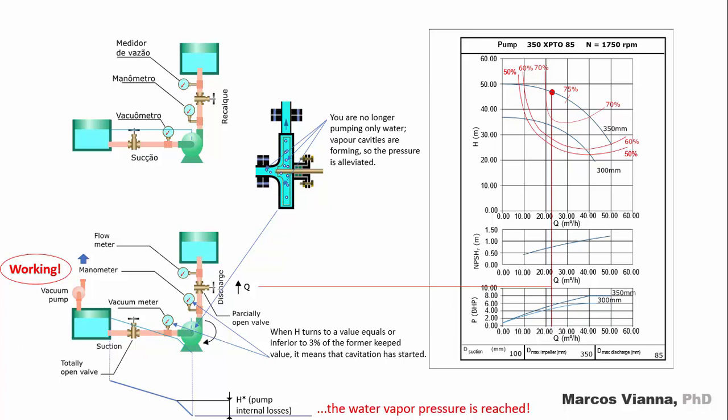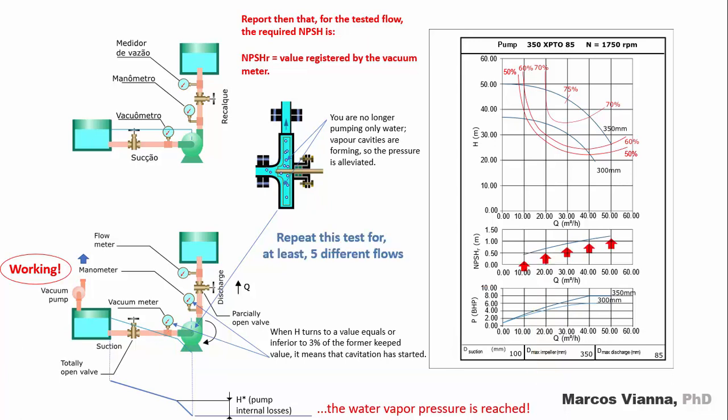Why? Because from now on, you are no longer pumping only water. Vapor cavities are forming, so the pressure is relieved. Now we can write down in our report that for the tested flow, the required NPSH is equal to the value registered by the vacuum meter. Repeat this test for at least 5 different flow values. That is how we get the NPSHR curve that we wanted.